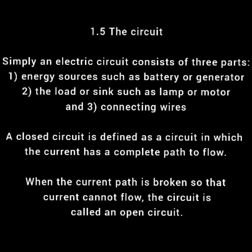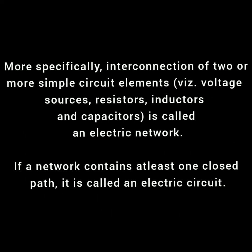Next, the circuit. Simply, an electric circuit consists of three parts: first, an energy source such as a battery or generator; second, the load or sink such as a lamp or motor; and third, connecting wires. A closed circuit is defined as one in which current has a complete path to flow, composed of active and passive elements. When the current path is broken so that current cannot flow, the circuit is called an open circuit. A connection of two or more simple circuit elements — voltage sources, resistors, inductors, and capacitors — is called an electric network. If a network contains at least one closed path, it is called an electric circuit.